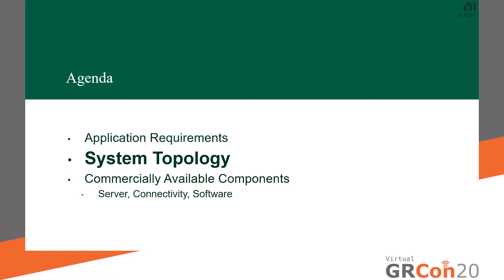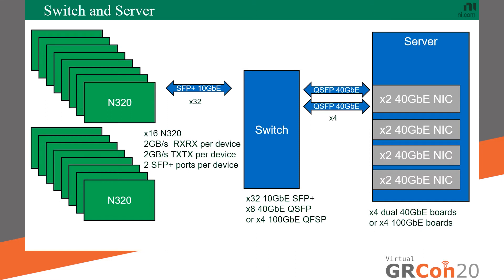We'll first look at system topologies that enable the required data movement, and then look at commercially off-the-shelf equipment that enables those topologies. Imagine an SDR system with 16 SDR devices, each capable of sending up to two gigabytes of data via a 10 gigabit connection to a server. That server needs to aggregate all those connections — potentially 16 or 32 ten-gigabit connections — using a switch that funnels them down into eight 40-gigabit or 400-gigabit connections.